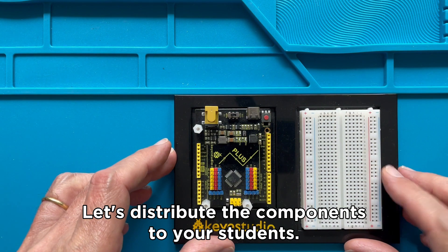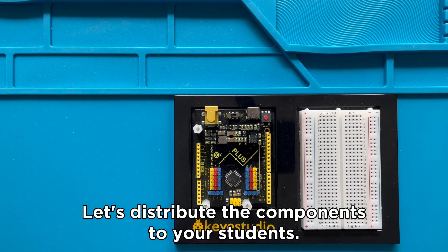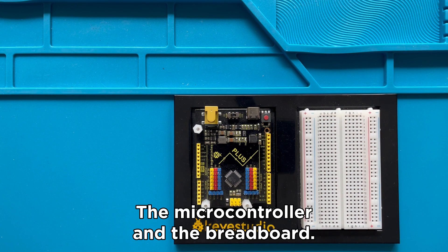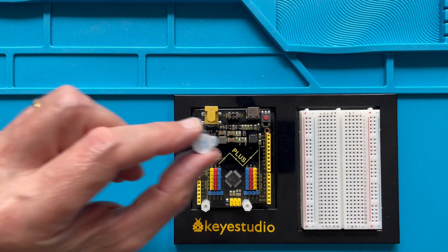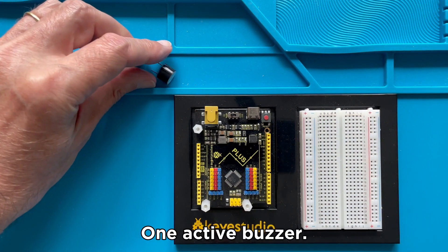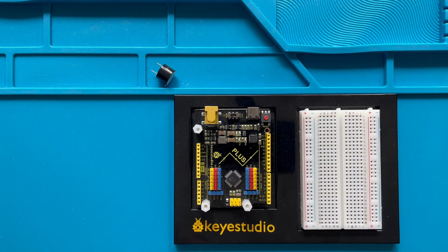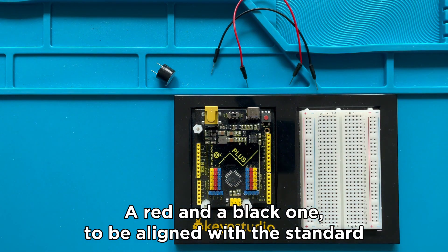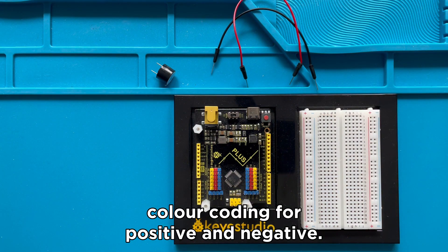Let's distribute the components to your students. The microcontroller and the breadboard. One active buzzer. Two jumper cables. A red and a black one to be aligned with the standard color coding for positive and negative.